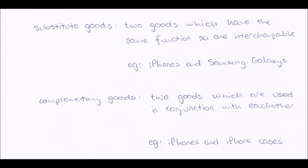If we have a negative cross elasticity of demand, then our two goods are complementary goods — goods which are used in conjunction with each other, so they go together. When you buy one, you sort of need the other one. An example would be iPhones and iPhone cases. When you buy an iPhone, you need to buy a case for it. So if the price of iPhones were to go up, it becomes less attractive — more unattractive — to buy iPhones, and people will stop buying them, which means they don't need to buy iPhone cases anymore.